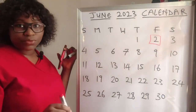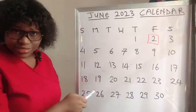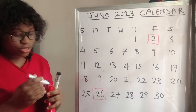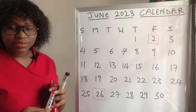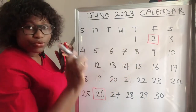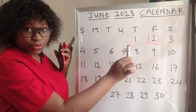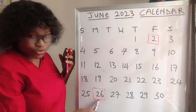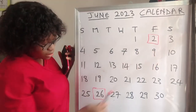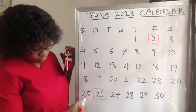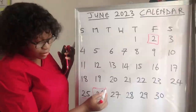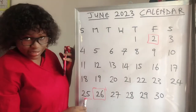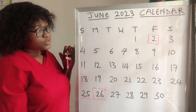Her period started on the 2nd, and the next time she got her period was on the 26th. So how do we calculate her cycle? We count from the first day she saw her period blood — the 2nd — to the last day before her next period. The next period falls on the 26th, so you count up to the 25th. You don't add the 26th, because that's the start of another cycle.